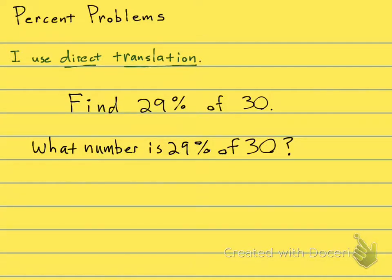So, what number, that's my unknown, I'll call it n, is equals 29%, 0.29, of means multiply, and 30. So you see we're doing the same thing, 0.29 times 30.